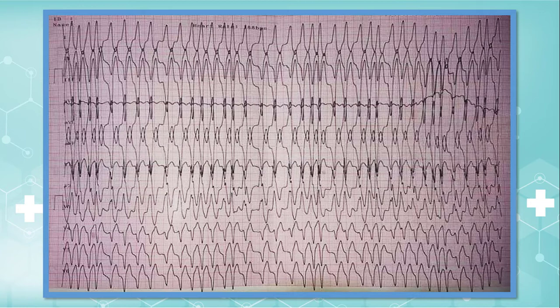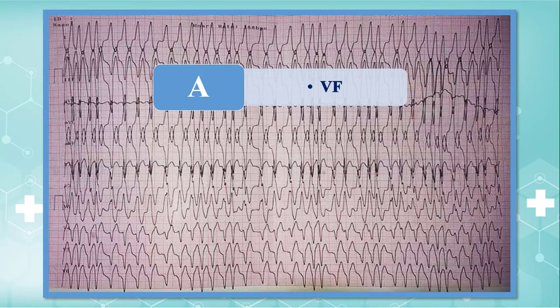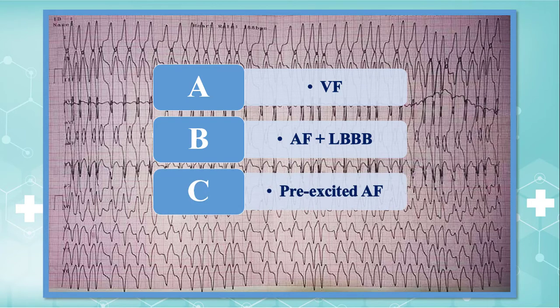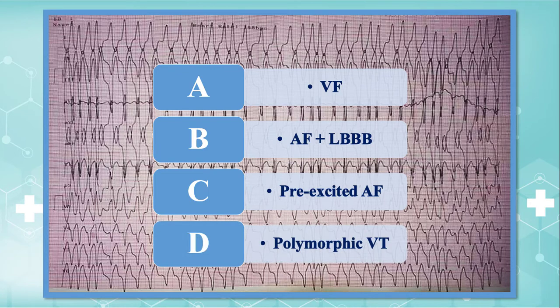The options are: 1. Ventricular fibrillation. 2. Atrial fibrillation with LBBB. 3. Pre-excited atrial fibrillation. And 4. Polymorphic ventricular tachycardia. What are you going to do for this patient?